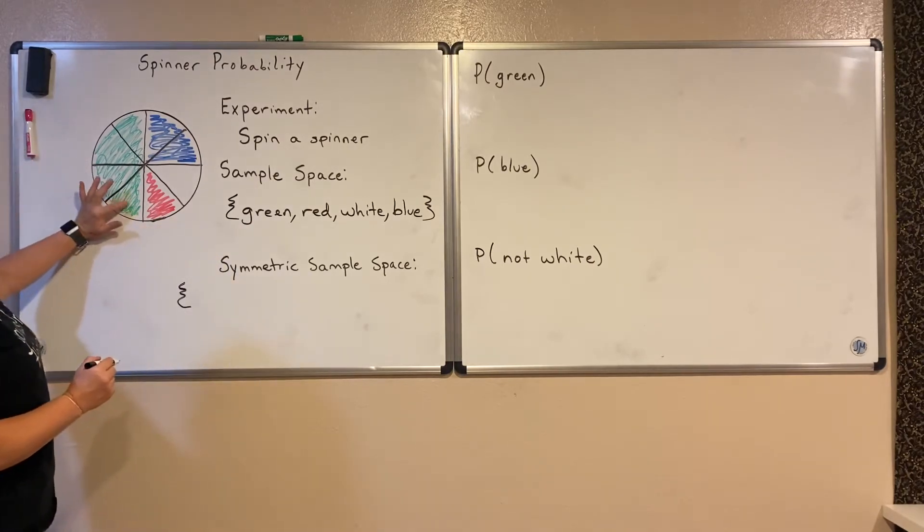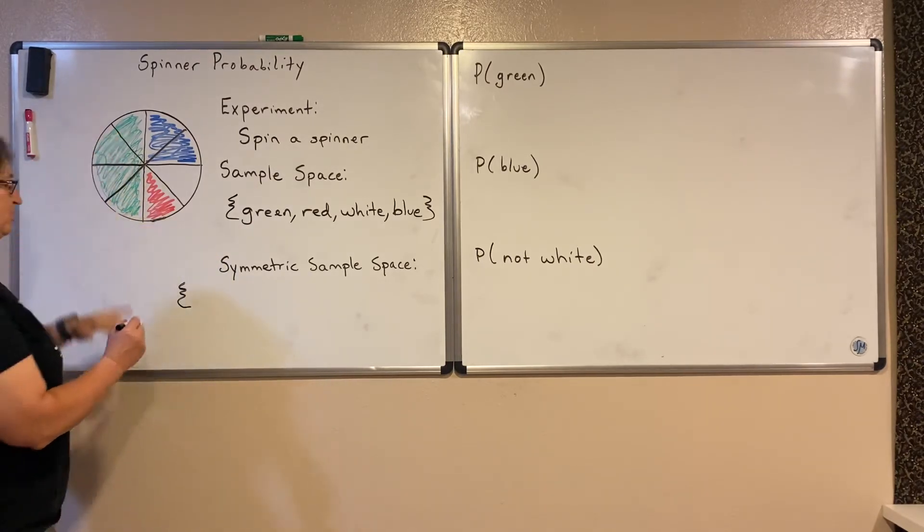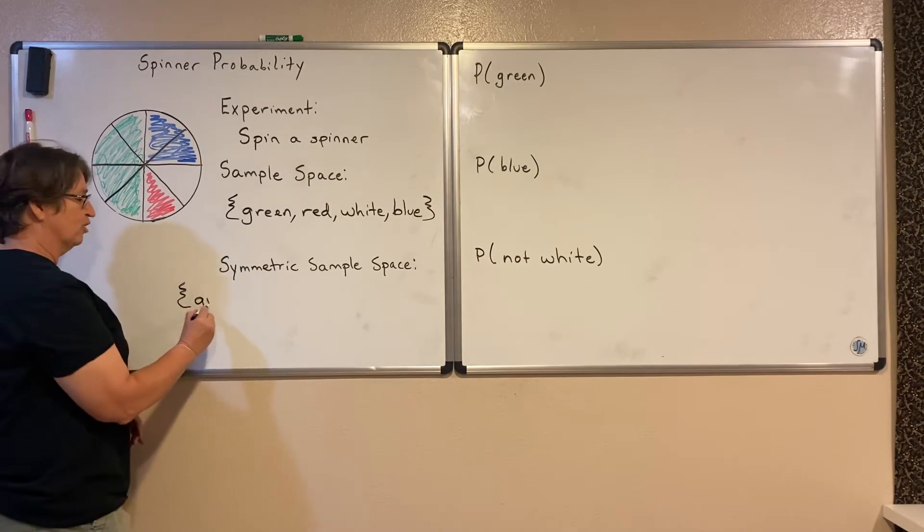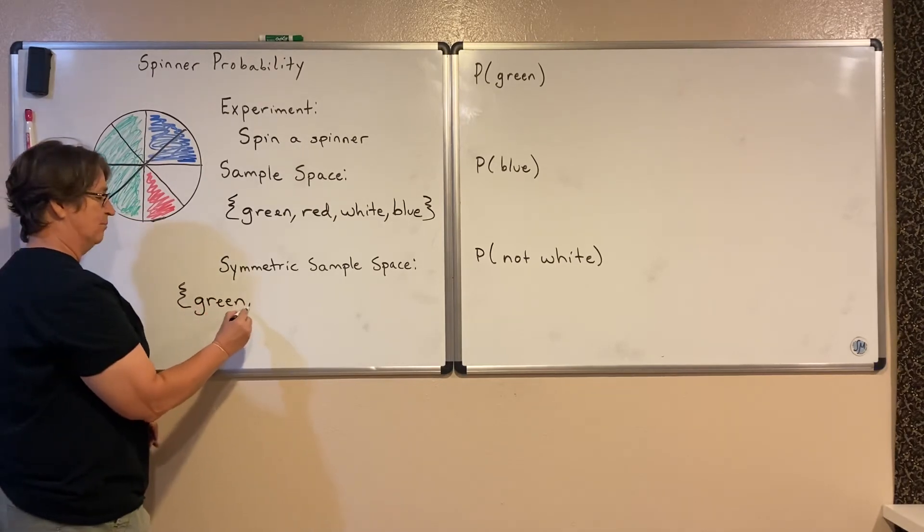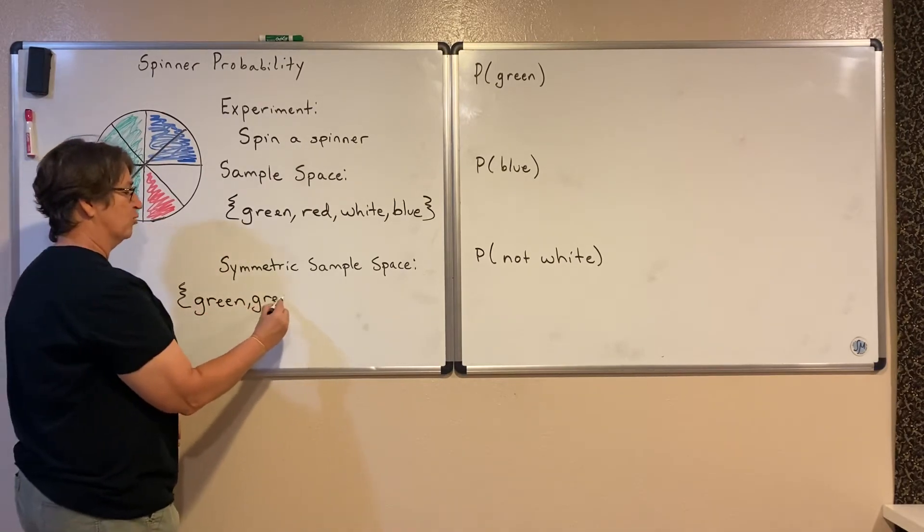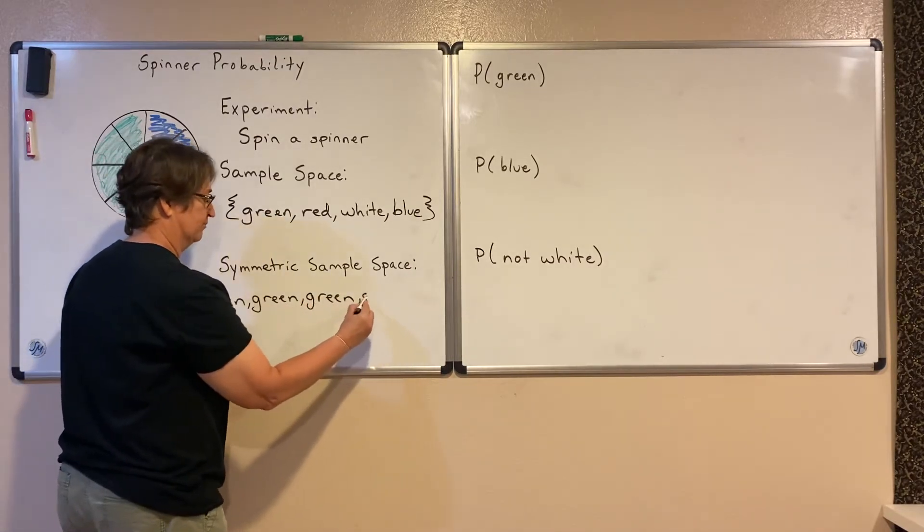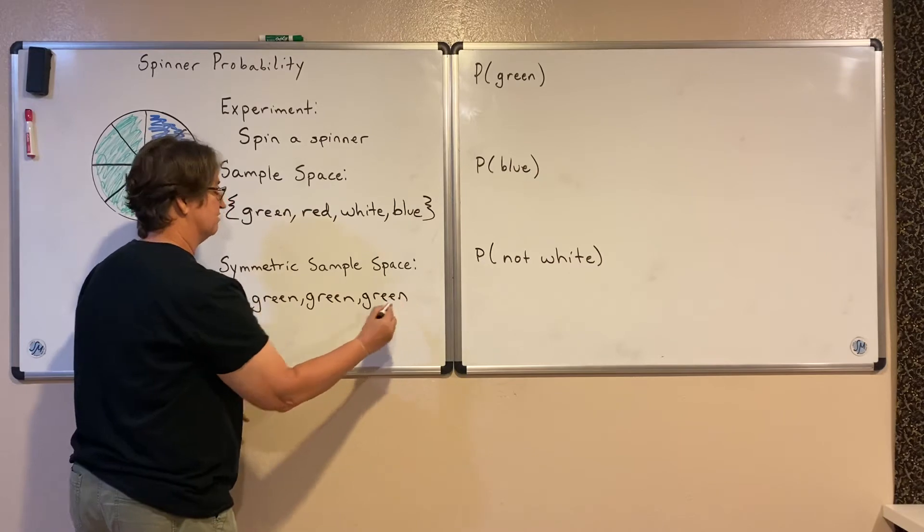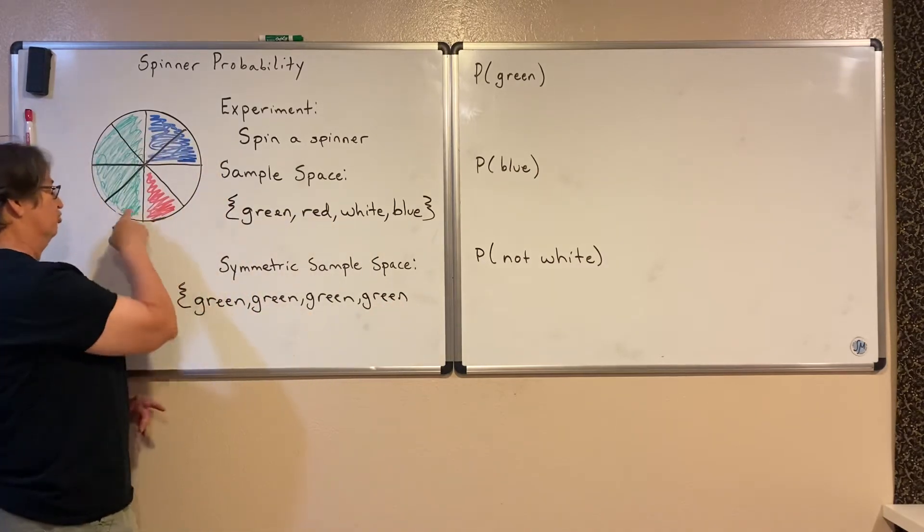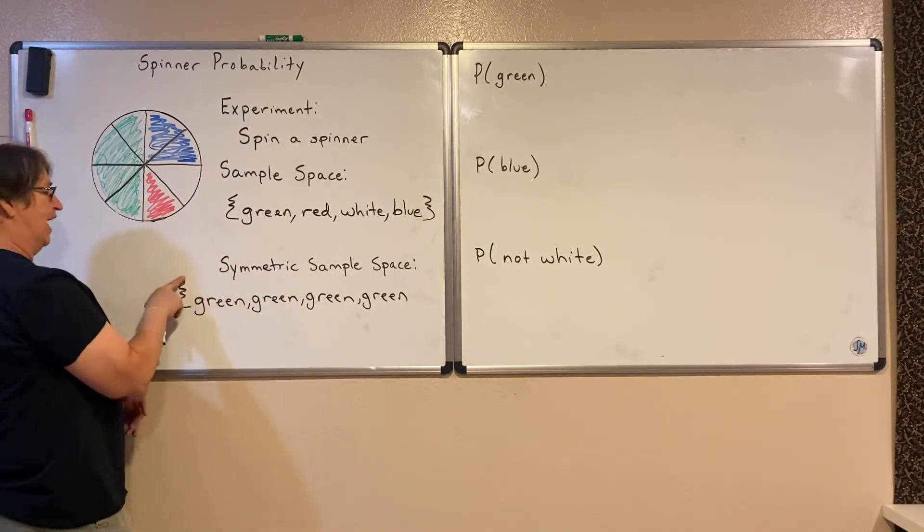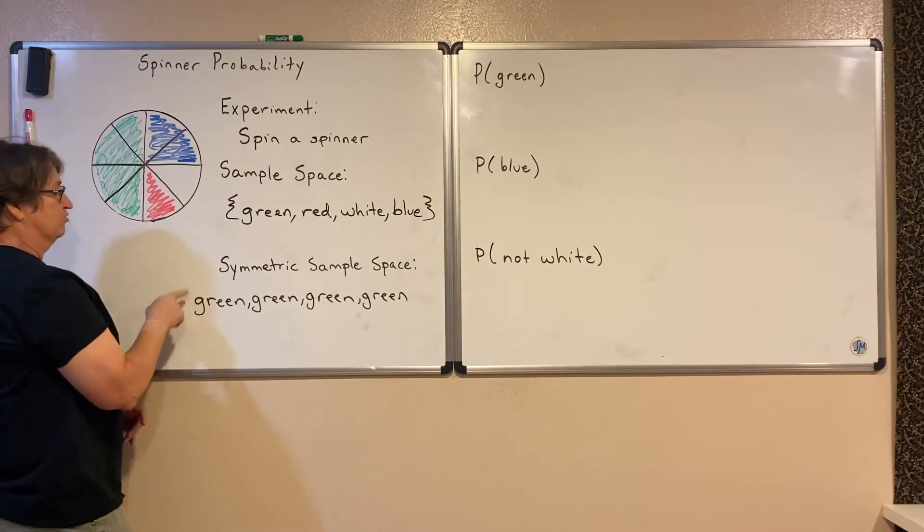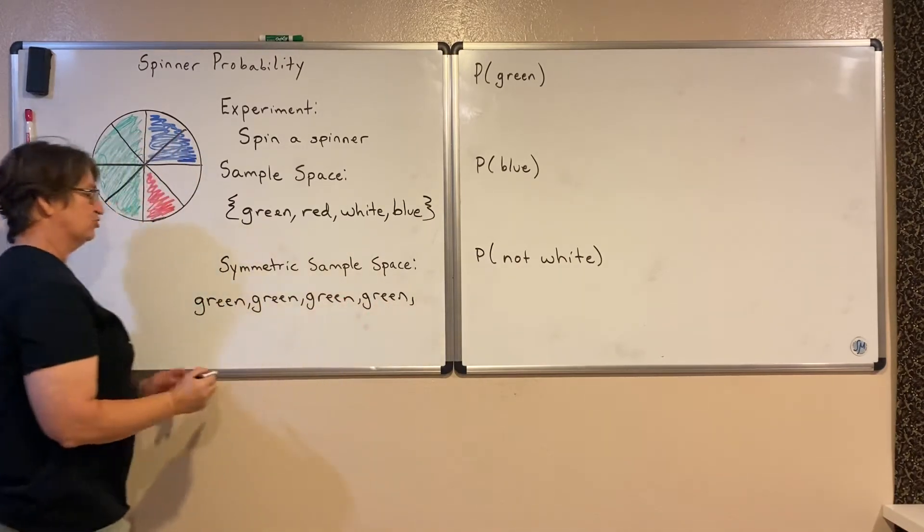And we see in that case, that green shows up one, two, three, four times. So in order for me to write the symmetric sample space, I would need to write that green on here four times. So now it's just as likely I land on this piece of green as it is I land on that piece of green.